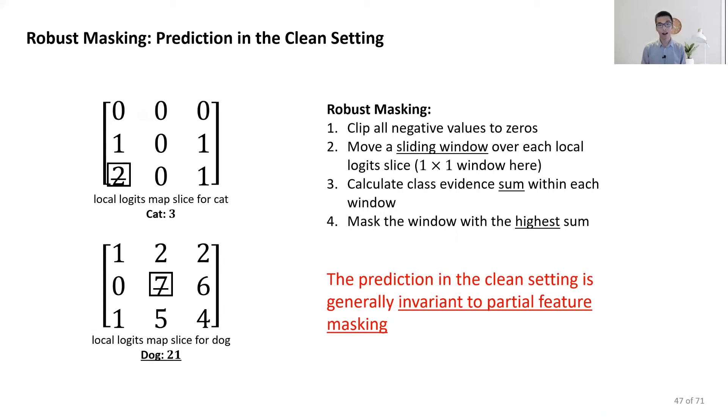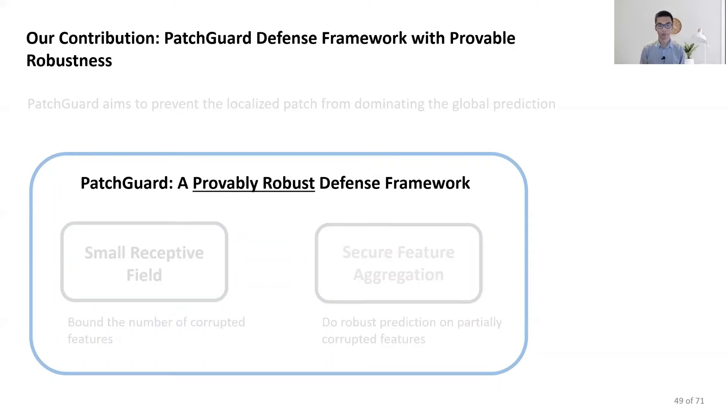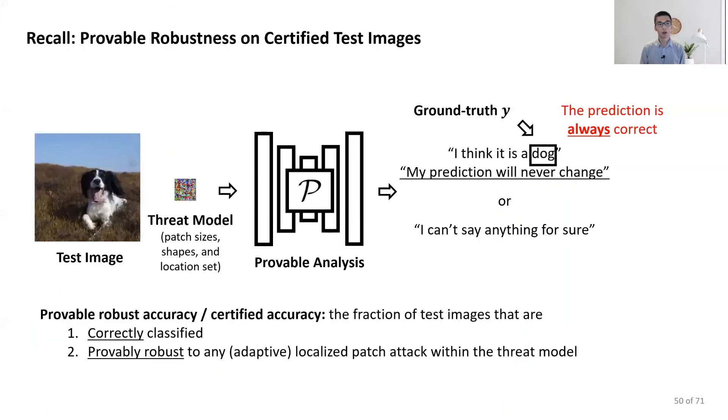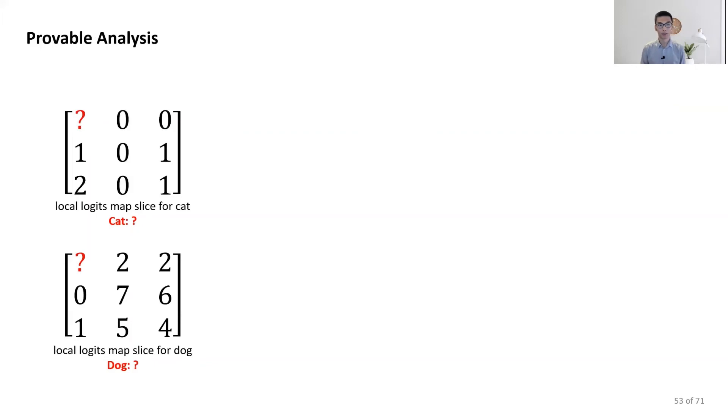What about the provable robustness? Recall our provable analysis. It takes test image and the threat model and ground truth as the inputs to determine whether each image can be correctly classified and provably robust. Now, in our provable analysis, we need to reason about how the adversary can control the values within a small window to bypass our defense to cause worst-case model prediction.